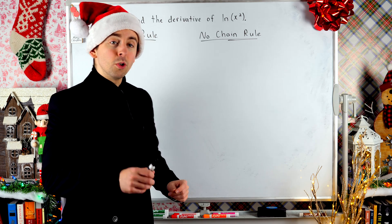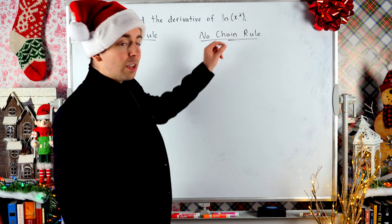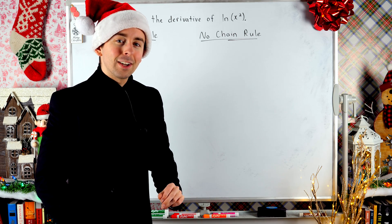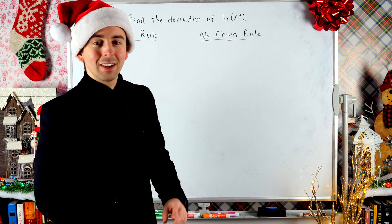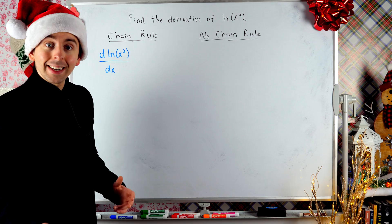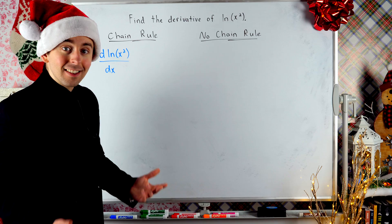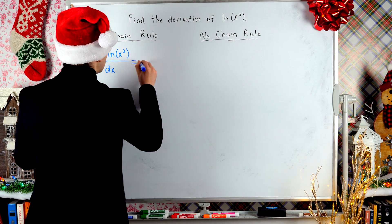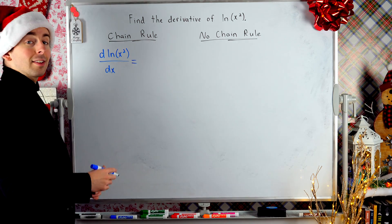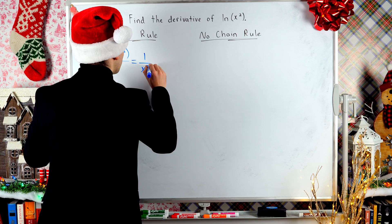I encourage you to give the chain rule solution a try yourself. You've got to take the derivative of the outside function, and then multiply by the derivative of the inside function. Give it a try yourself. Now let's get to the solution. What's the derivative of the natural log of x squared with respect to x? We use the chain rule, because it's the function x squared inside of the natural log function. For the chain rule, we first take the derivative of the outside function. The outside function is the log function, and the derivative of that is just 1 divided by the stuff inside.